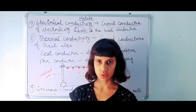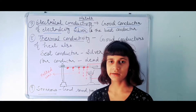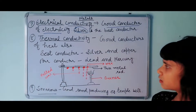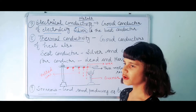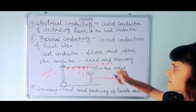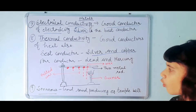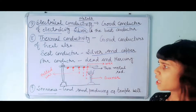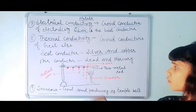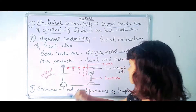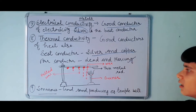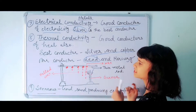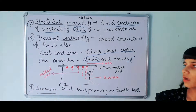Metals get heated easily. The best conductors of heat are silver and copper — they conduct heat in just a few seconds. Poor conductors of heat are lead and mercury.